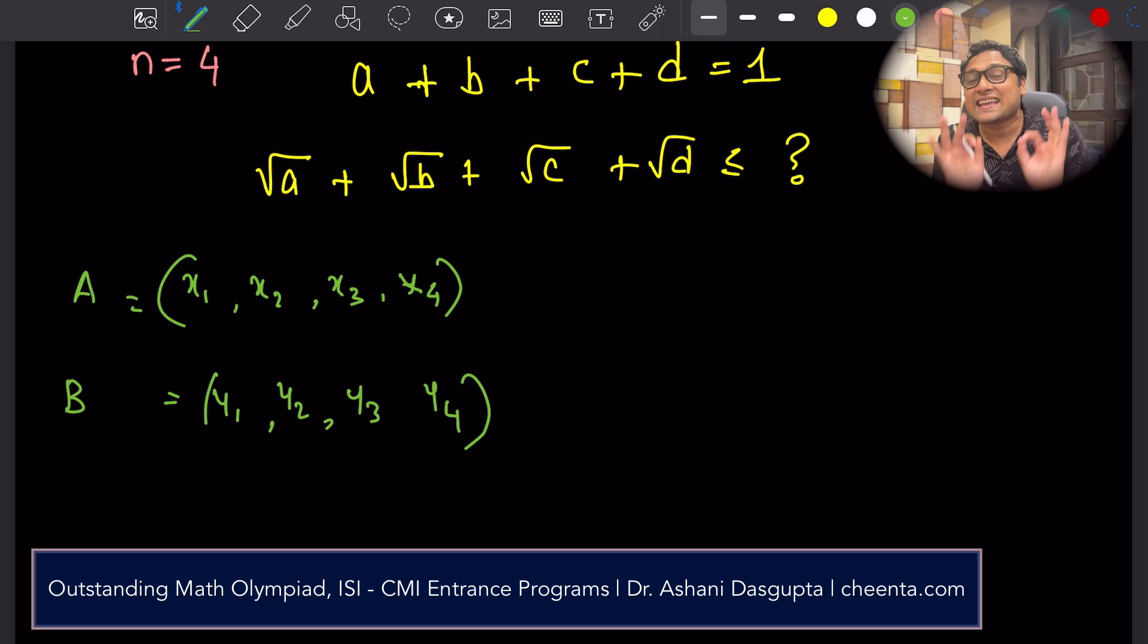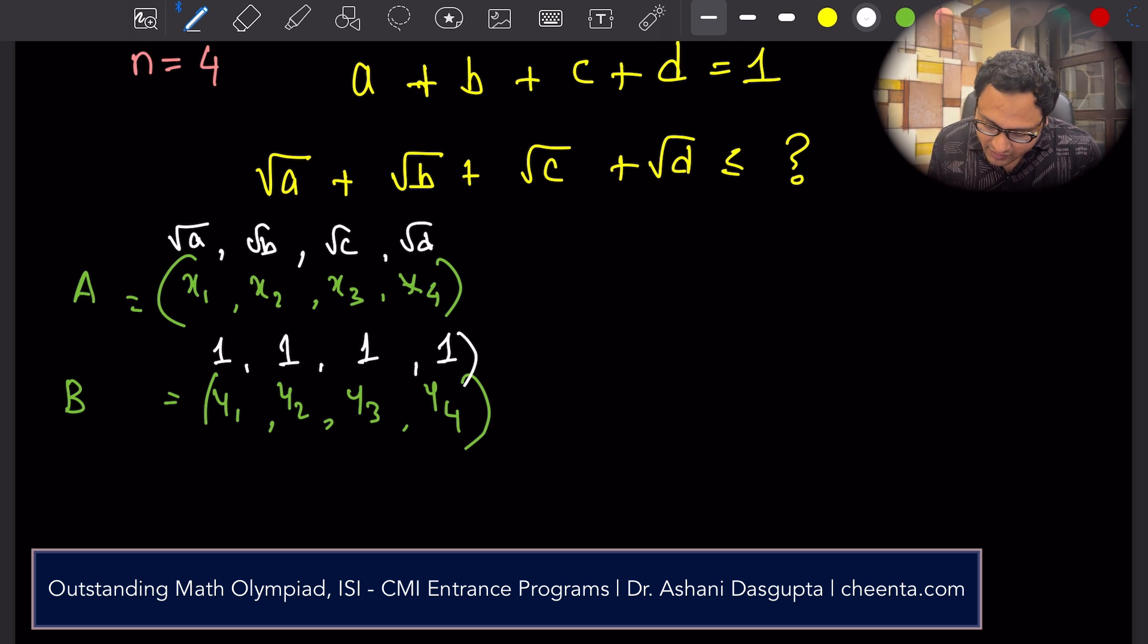That is the second point. The trick to apply Cauchy-Schwartz inequality in problems is to figure out what are these two points in the context of the problem. So what I'm going to do is, I'm going to set this up like this. This is square root of a, square root of b, square root of c, square root of d. This is 1, 1, 1, 1. You will see that in the context of this problem, this works magically.